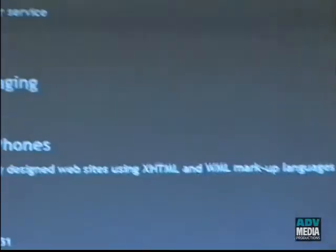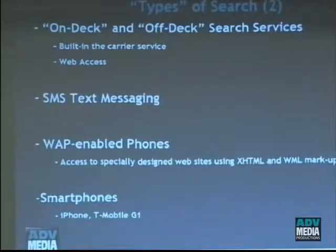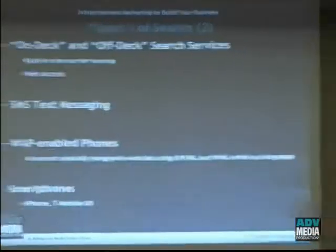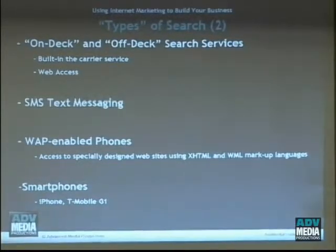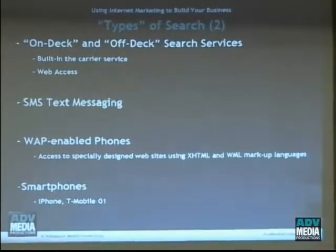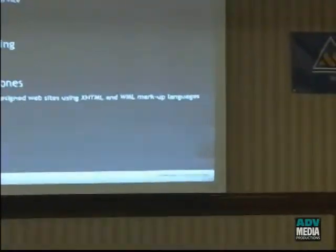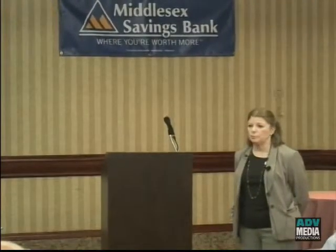Now we have smartphones, and with smartphones you have two types of search: on deck and off deck. On deck means if you have a service provider, they have an inventory of organic search — they're only searching their own inventory. But if you have off deck search, that means the smartphone goes out, uses a web browser, and you can get any search engine that's out there. Your access is much more global. Most smartphones now have off deck, where you can go out to the internet.